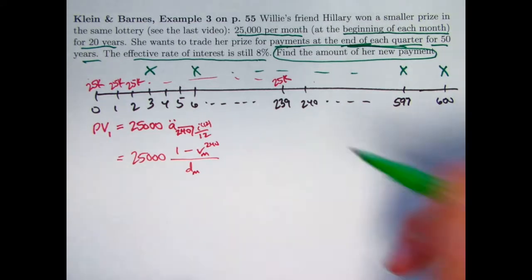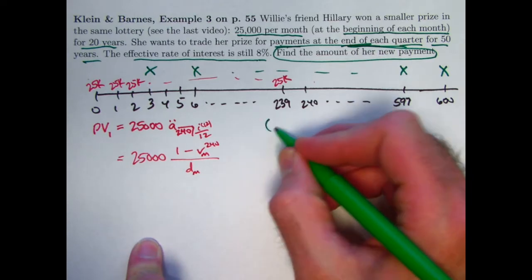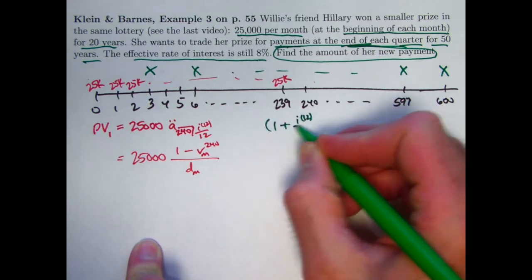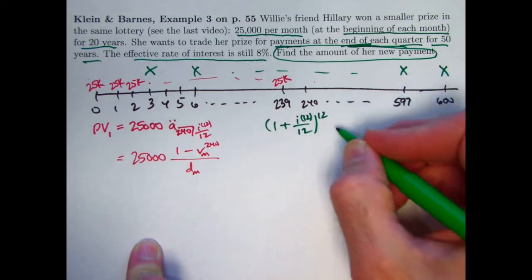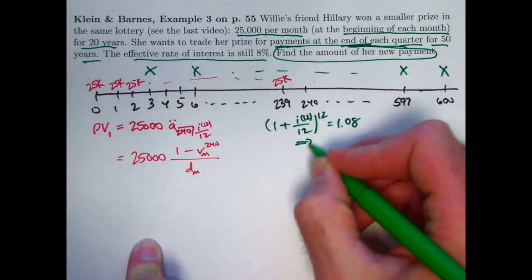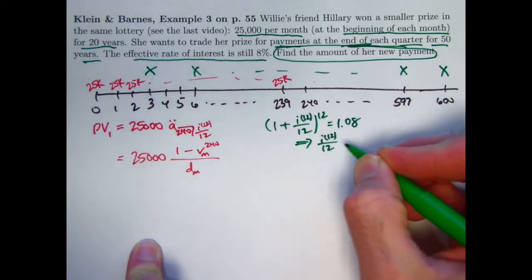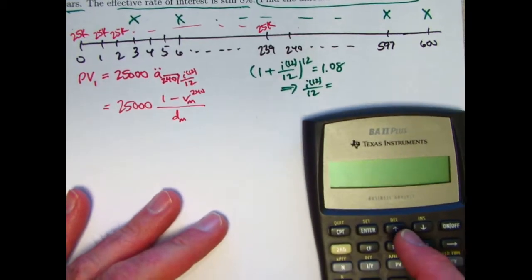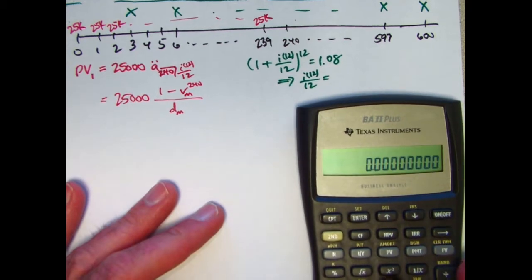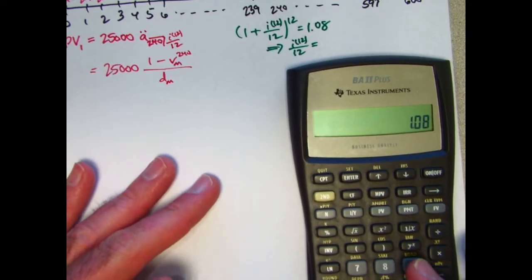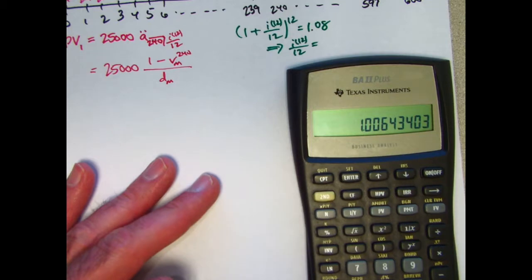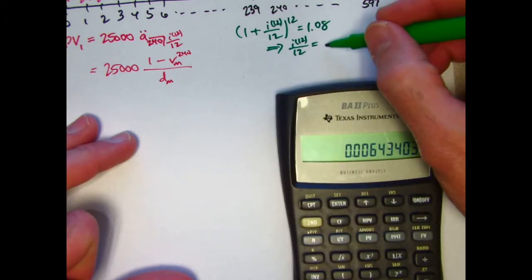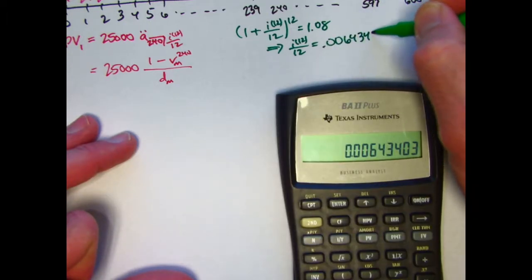But let's go ahead and solve for I-12 over 12. It's going to be based on this equation, 1 plus I-12 over 12 to the 12th power would be 1.08. So I-12 over 12, again, which I could have just called I-sub-M, is going to be 1.08 to the 1 12th power minus 1. 1.08, the 1 12th power will be to the power 0.083 repeating, approximately that. Subtract 1. There is I-12 over 12, 0.00643403.